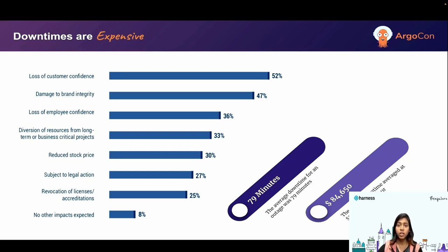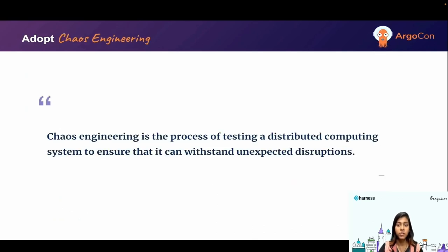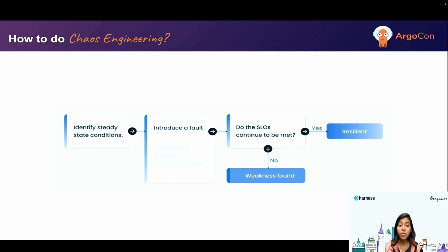One way to achieve this is adopting the practice of chaos engineering. Chaos engineering is the process of testing a distributed computing system by injecting faults intentionally. The goal is to identify weaknesses in the application through controlled experiments and check whether it can withstand unexpected behavior or not.